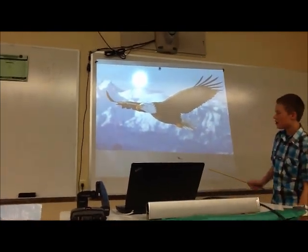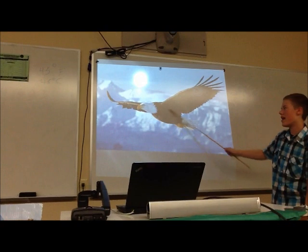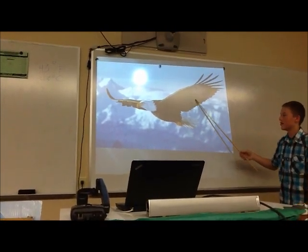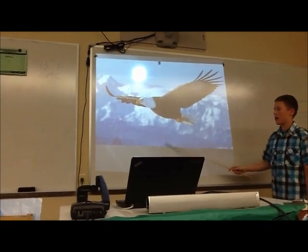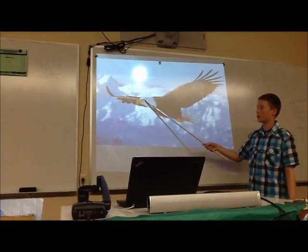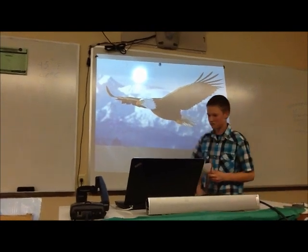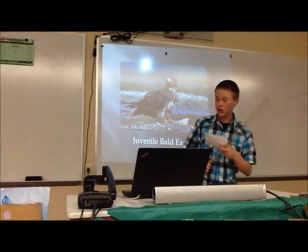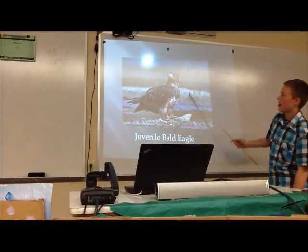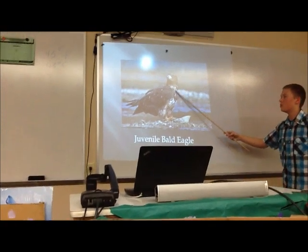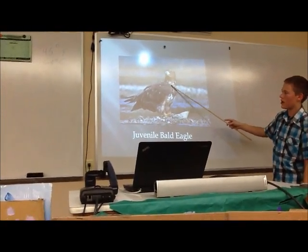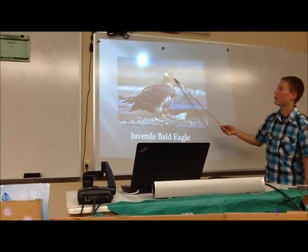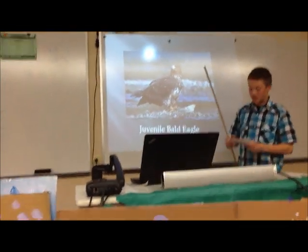As you can see in this picture, the Bald Eagle has a white head and tail, as well as a black and brown body and wings, a yellow beak, yellow feet, and a yellow eye. The juvenile Bald Eagle has a gray bill, is brown all over, has white spots throughout the body and wings, yellow feet, and a brownish-yellow eye.